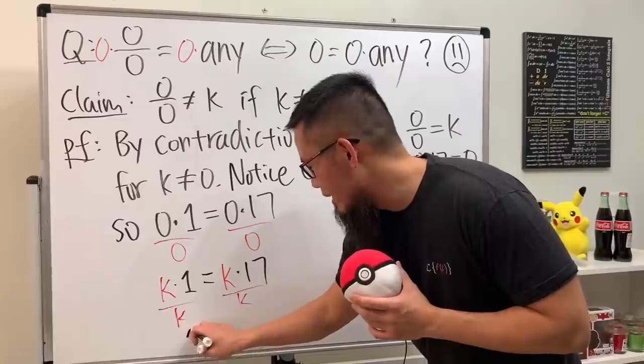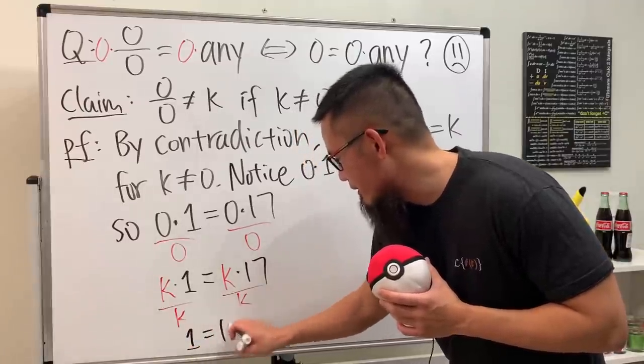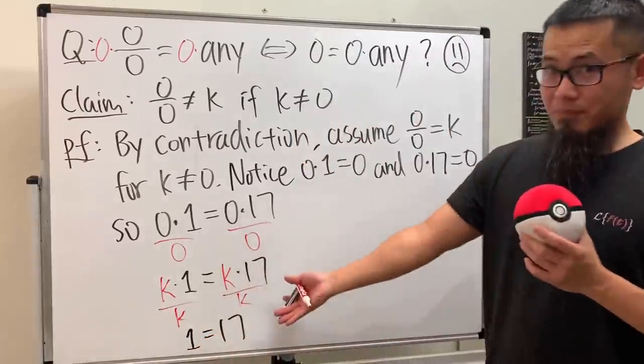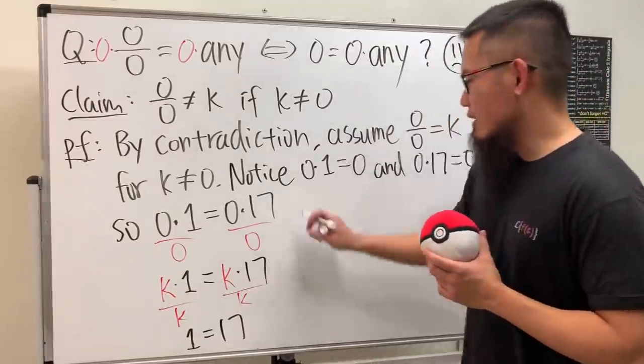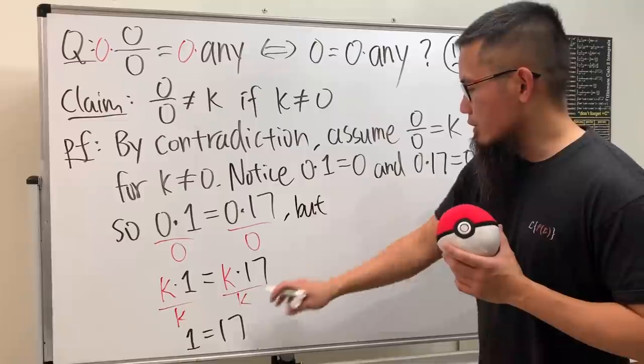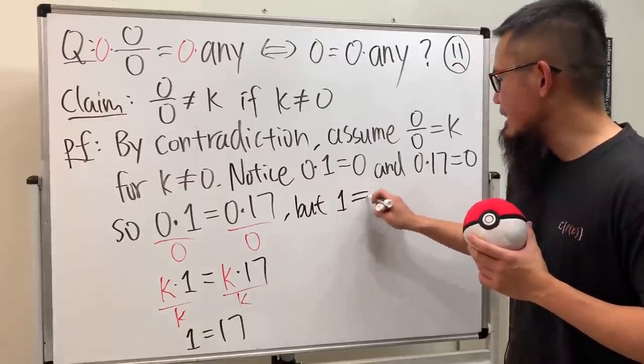This right here we get one. Oh my god, one is equal to 17 after we divide both sides by k. Of course this is wrong, so I'll just say but you see that one is not equal to 17.